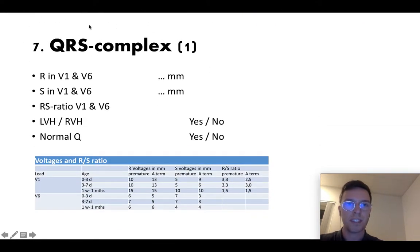Then step seven, check the QRS complex. Check the millimeters of R in V1 and V6, S in V1 and V6. Check the RS ratio between V1 and V6. Check if there is left ventricle hypertrophy or right ventricle hypertrophy. And check the aspect of Q as in the normal shape.